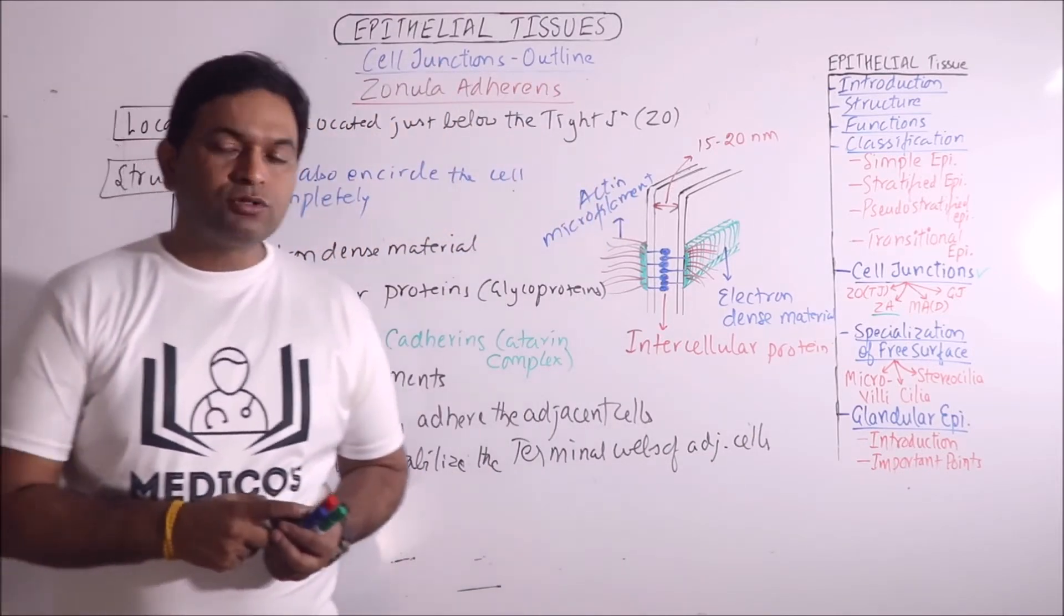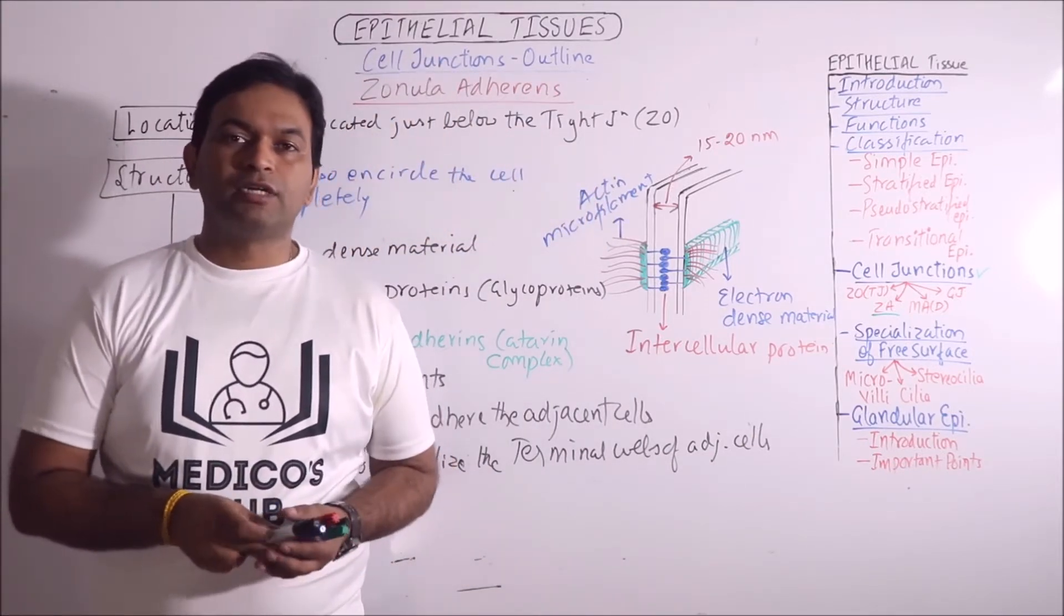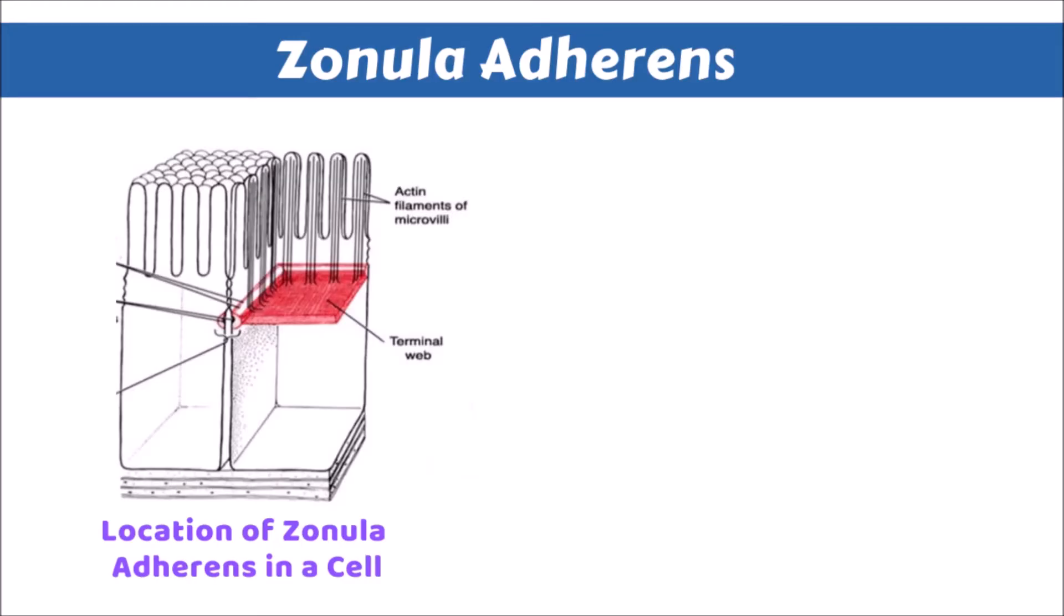Now, we will view some images and diagrams related to zonula adherence. In the given diagram we can observe the red region which is representing the terminal web. Terminal web is present in the apical region of the cell and is made up of network of actin microfilaments.